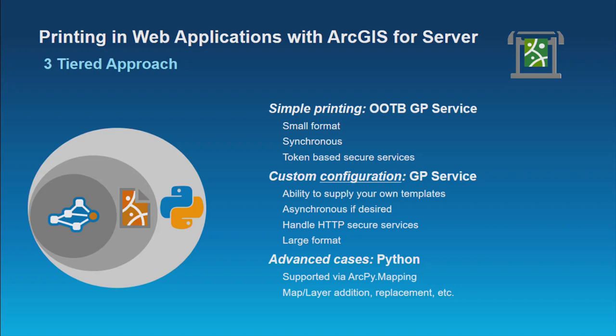It was back around version 9.2, 9.3, or 9.4 where we started providing the ability to print web maps through server. A little bit of a pet peeve of mine — when we talk about printing, it's not really printing, it's really exporting. It's exporting out primarily to a PDF or a TIFF or a JPEG. Then you can take those files and do a print, but primarily it's exporting.